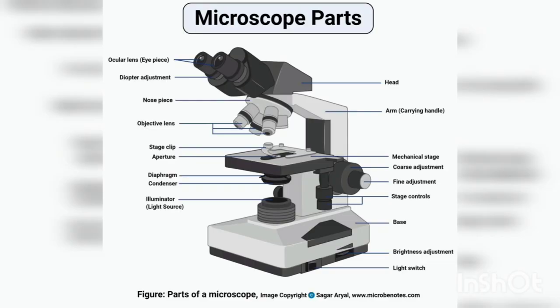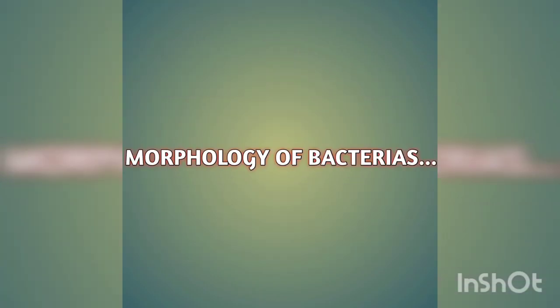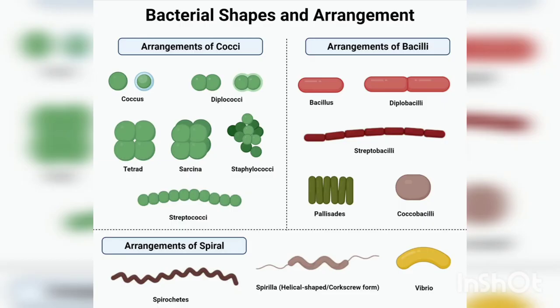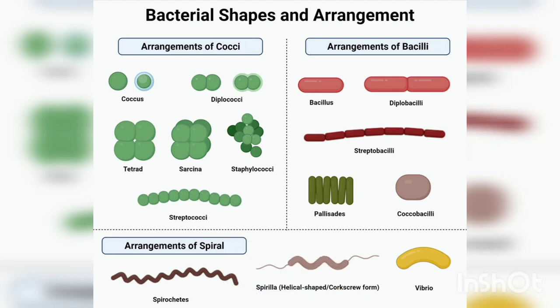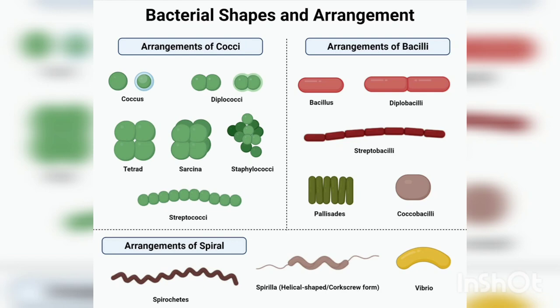So we have studied the parts of the microscope, what microscopy is, and six different kinds of microscopes with their specialities. Next we will study the morphology of bacteria — that is, the shape and structure of bacteria as they appear under the microscope. Different kinds of bacteria have different shapes and structures. Bacteria may be in coccus shape, bacilli shape, spiral shape, or comma shape, which is also called vibrio. The coccus is round in shape. Diplococcus means two round-shaped bacteria attached together, and then we have tetrads, sarcina, staphylococci, and streptococci.